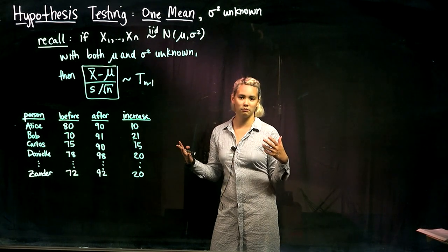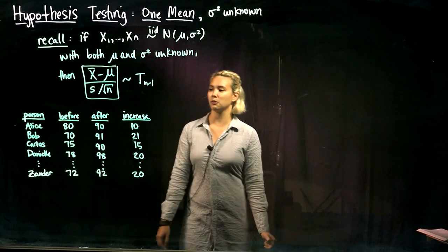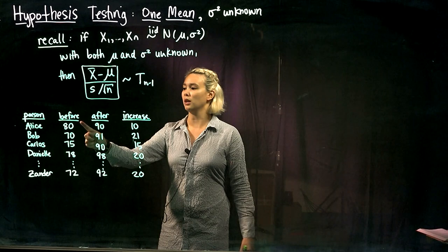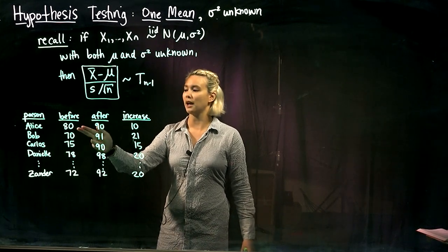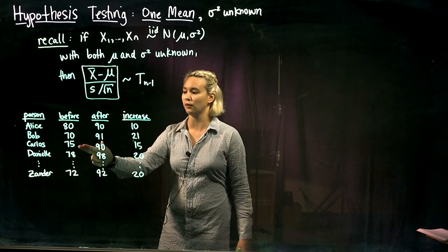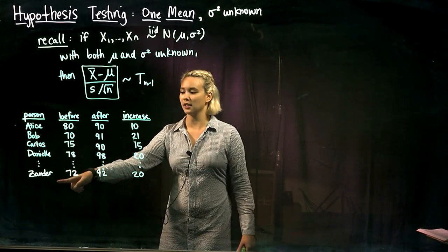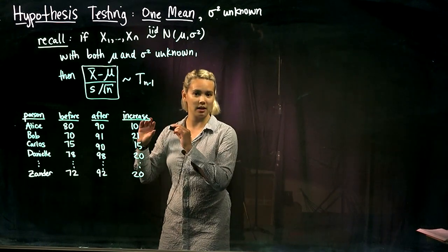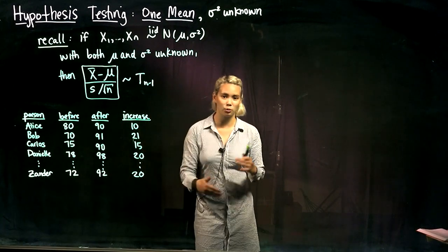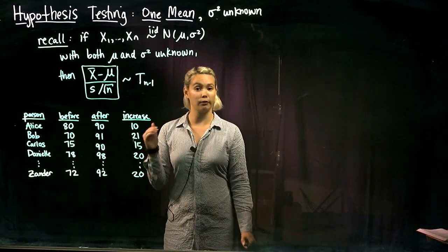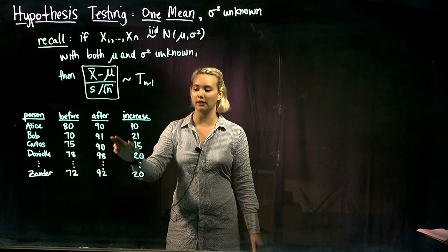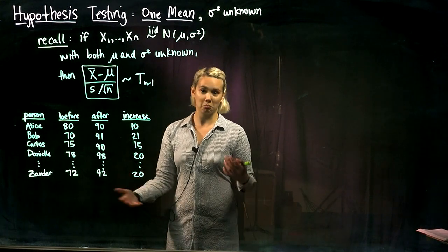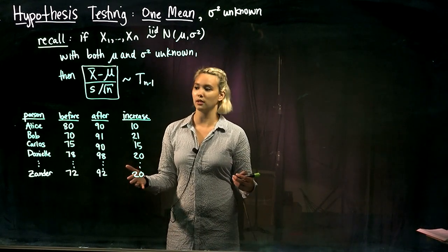So imagine we have something like a test of some kind. Perhaps before getting trained or before some class then we observe these test scores. Maybe Alice got a score of 80, Bob got a score of 70, Carlos 75, Danielle 78, and all the way down to Xander who got a score of 72. So they took the test, got these scores, and then maybe they had some training, some kind of class or something like that, and then they retook the test.